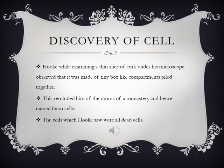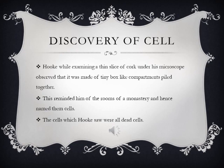Coming to the next topic: the discovery of the cell. Hooke, while examining a thin slice of cork under his microscope, observed that it was made up of tiny box-like compartments piled up together, somewhat looking like a honeycomb structure. This reminded him of the rooms of a monastery, and hence he named them cells. Importantly, the cells which Hooke saw were all dead cells, not living cells — that is a very important thing to remember.